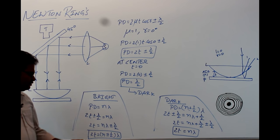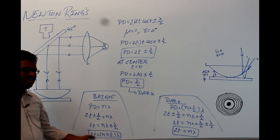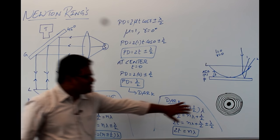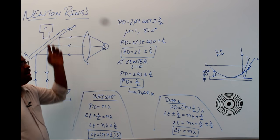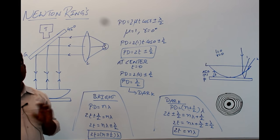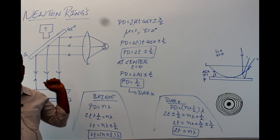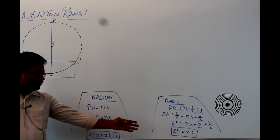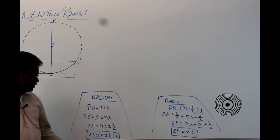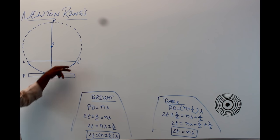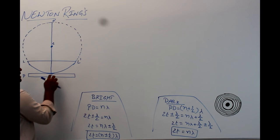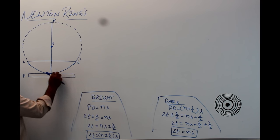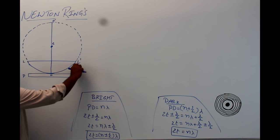Next, we find the value of t and substitute it to get the diameters of the rings, which can be measured through the telescope using vernier calipers. The condition for bright fringe is 2t = (n ± 1/2)lambda and for dark fringe 2t = n lambda, where t is the thickness of the air film. Since it is varying thickness — zero at center and increasing as you move outward — we calculate t geometrically.